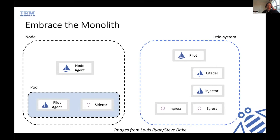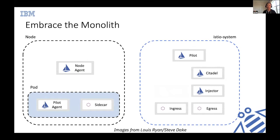The next component we removed was Galley. We decided it was much easier to move its functionality into Pilot, having Pilot ingest configuration changes directly from the Kubernetes API server. After that we removed the sidecar injector, which is essentially a mutating webhook server. For those familiar with Kubernetes, you can build your own webhook server — we essentially moved that code into Pilot.